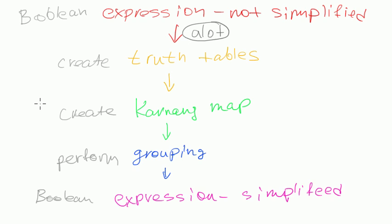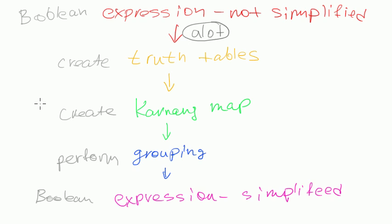If you have already truth table to simplify into expression, then you apply Karnaugh map technique. Which is, basically, this part is the Karnaugh map technique. First, you create Karnaugh map, which is you just rewrite the truth table in the way that Karnaugh map is written. And then you perform grouping.